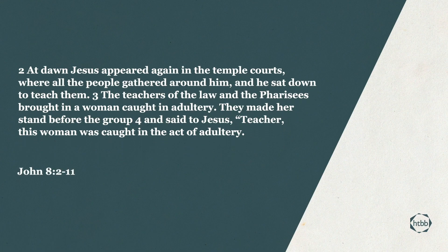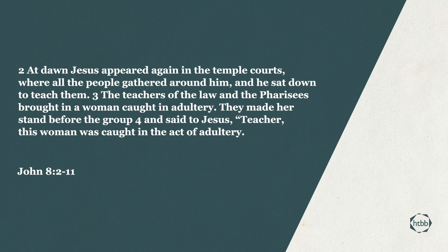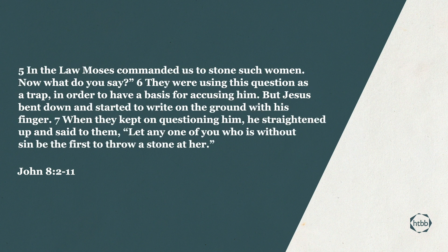At dawn, Jesus appeared again in the temple courts where all the people gathered around him and he sat down to teach them. The teachers of the law and the Pharisees brought in a woman caught in adultery. They made her stand up before the group and said to Jesus, teacher, this woman was caught in the act of adultery. In the law, Moses commanded us to stone such a woman. Now, what do you say? They were using this question as a trap in order to have a basis to accuse him.